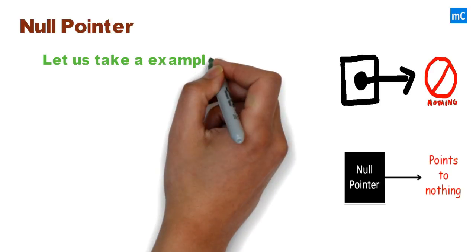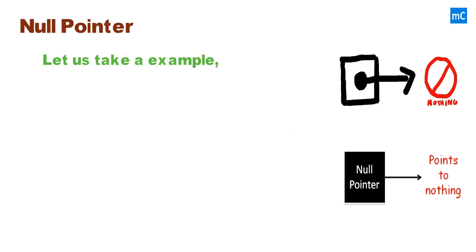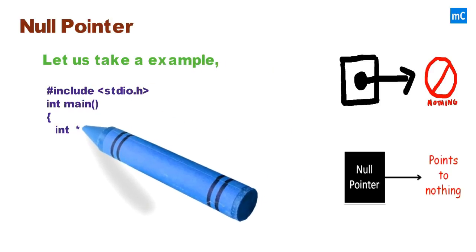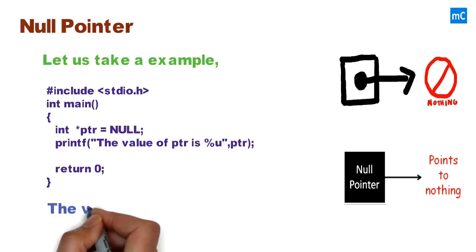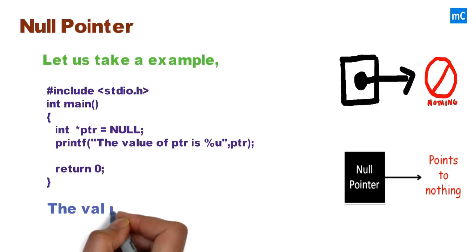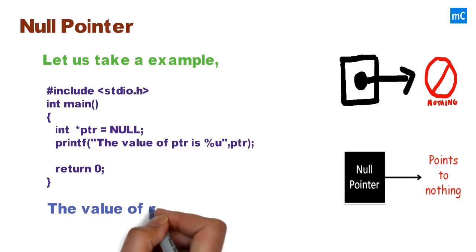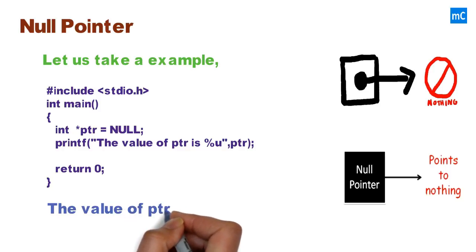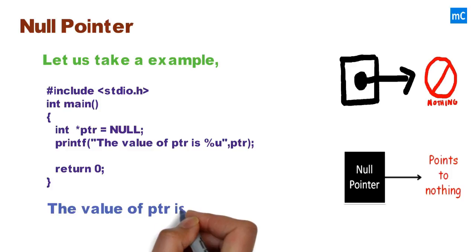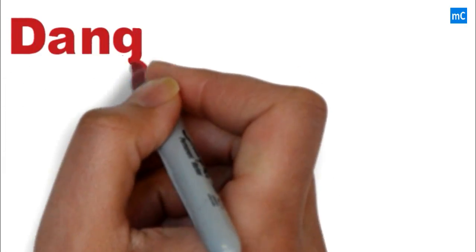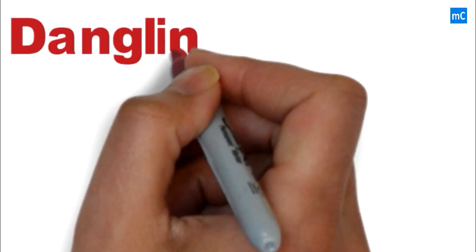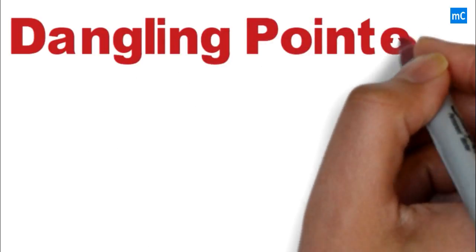Let us take an example for null pointer. In this example, null value is assigned to pointer ptr. As we know, null is defined as zero, so ptr holds a zero value. Next we will move to dangling pointer.